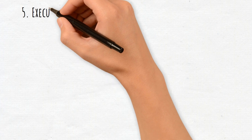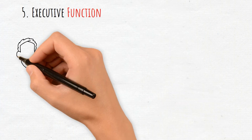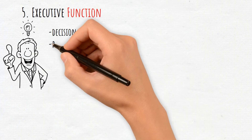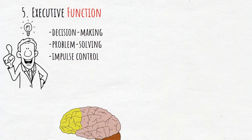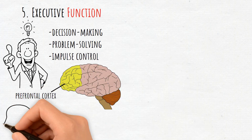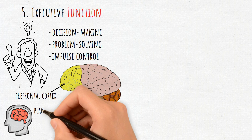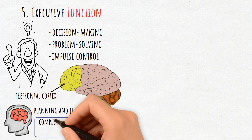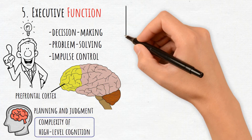5. Executive Function. This includes decision-making, problem-solving, and impulse control, primarily managed by the prefrontal cortex. Damage to this area disrupts planning and judgment, showcasing the complexity of high-level cognition.